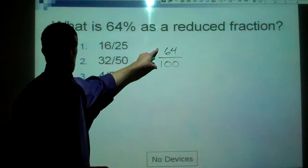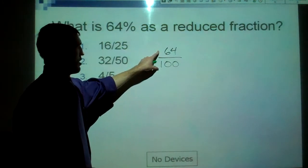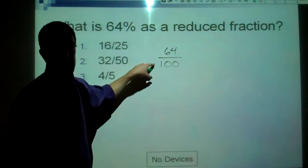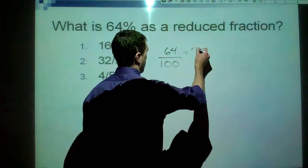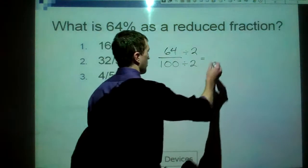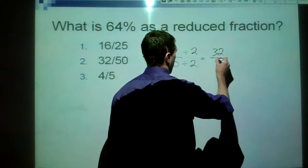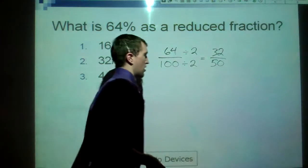Let's say I don't necessarily know what goes into both of these. I don't know the greatest common factor, but I do know that two goes into both of these, because both of these numbers are even. So, I'm going to start off dividing by two. Sixty-four divided by two is thirty-two. Hundred divided by two is fifty.